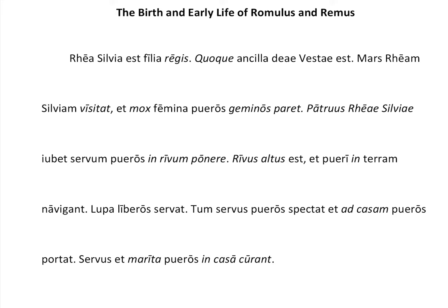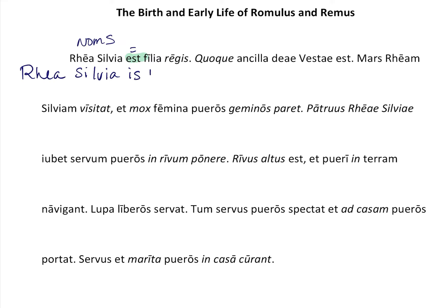Rhea Silvia is nominative singular — that is her name. Names are declined in Latin, but in English we just use one form. Then 'est' means 'is,' which we already know. We know that 'filia' means daughter, and 'est' works like an equal sign, so we're looking for another nominative form. So: Rhea Silvia is the daughter.